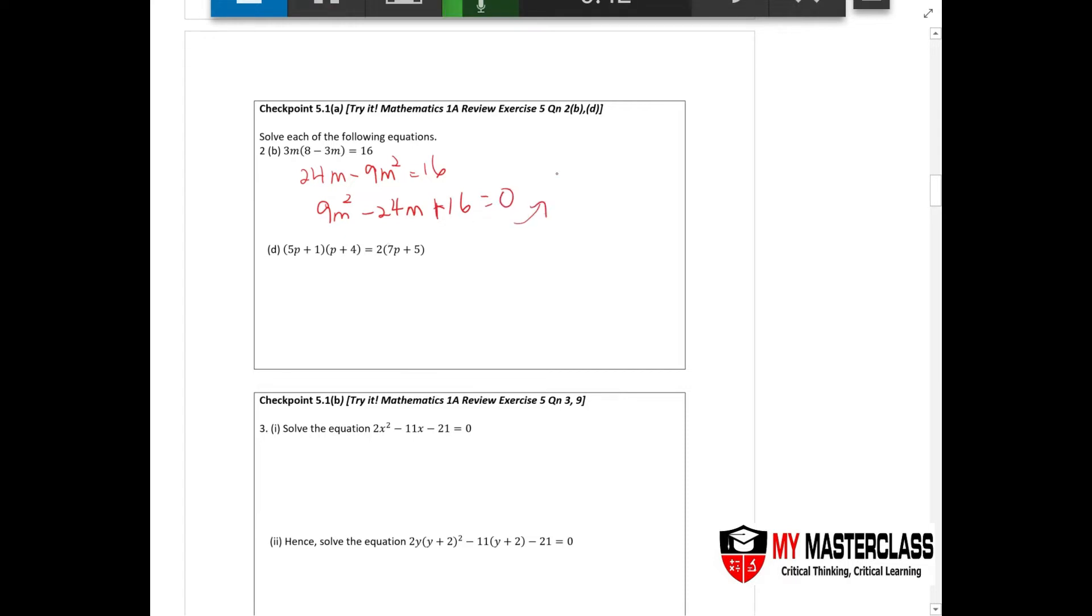Pressing your calculator, do your cross factorization method. You should get 3m minus 4, 3m minus 4 equals to 0. This is not the answer because the question is asking to solve, so you have m equals 4 over 3. Please make sure to solve for m.